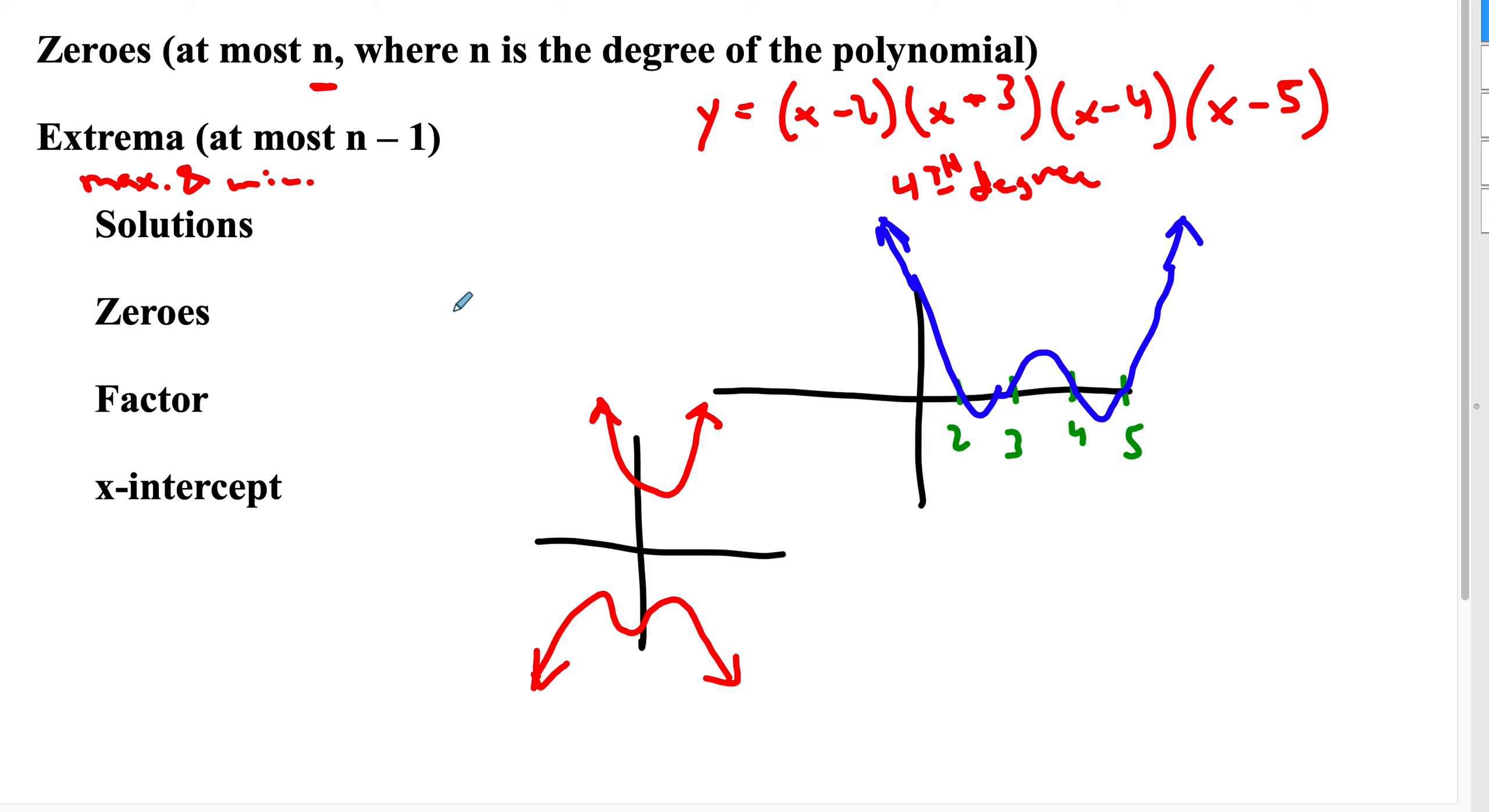What that means is, for a 5th power model, you'd have, at most, 5 zeros, and at most, 4 extrema. Now, if we're talking about a 5th power model, we know that the end behavior would have to be the opposite. So, let's say it's here and here. You could have 5, 1, 2, 3, 4, 5 roots. And, look, 1, 2, 3, 4, which is 1 less than 5 extrema.